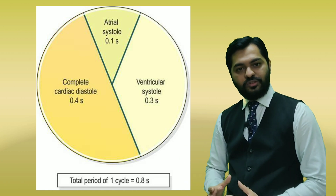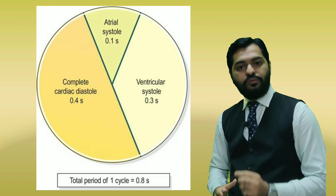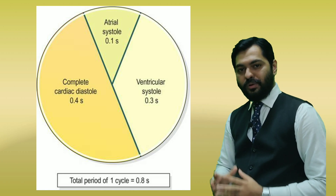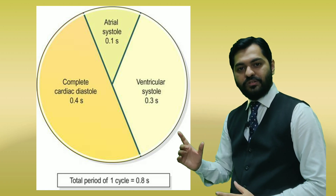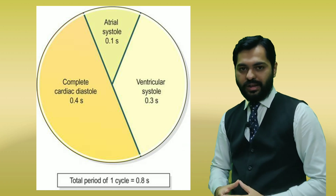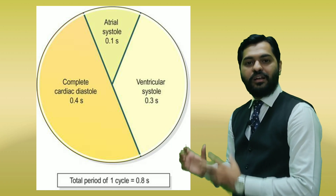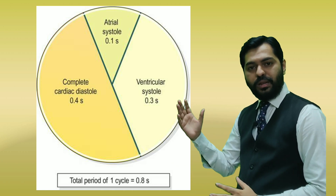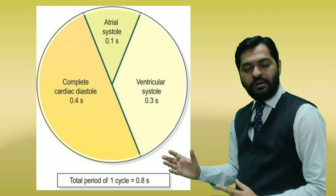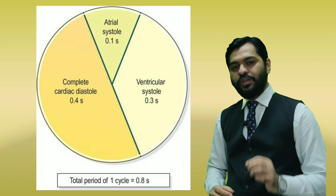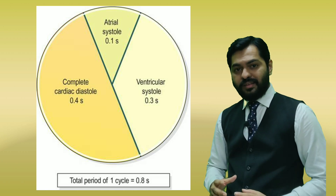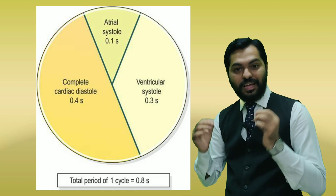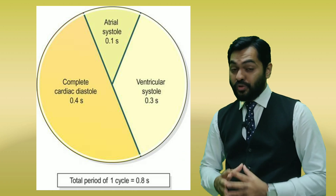This is followed by joint diastole, or complete cardiac diastole, of 0.4 seconds. Atrial systole means atrial contraction, ventricular systole means ventricular contraction, and joint diastole means relaxation — where all four chambers of the heart are relaxing. So 0.1 + 0.3 + 0.4 gives a total of 0.8 seconds for one cardiac cycle.